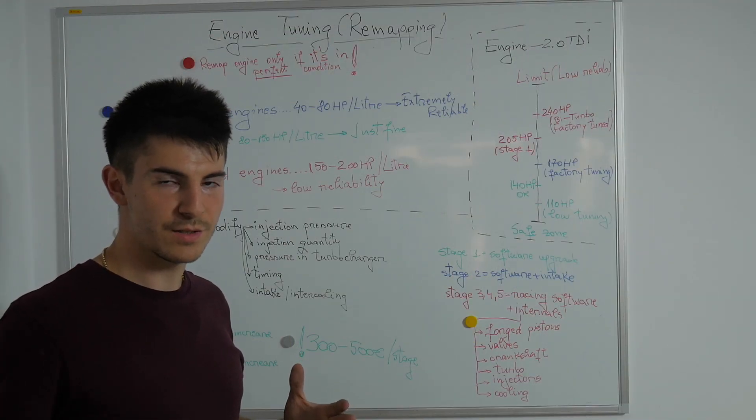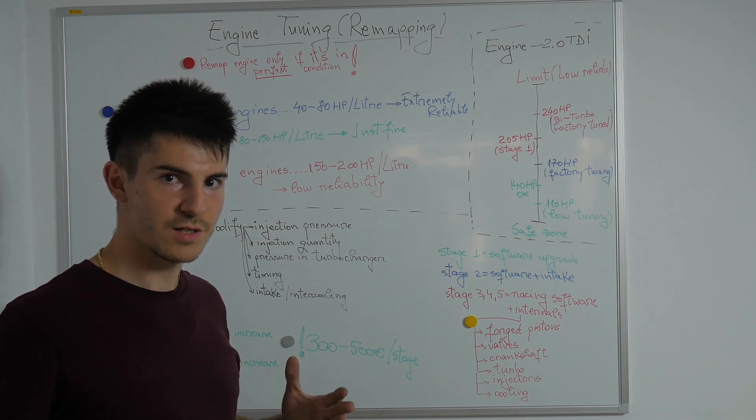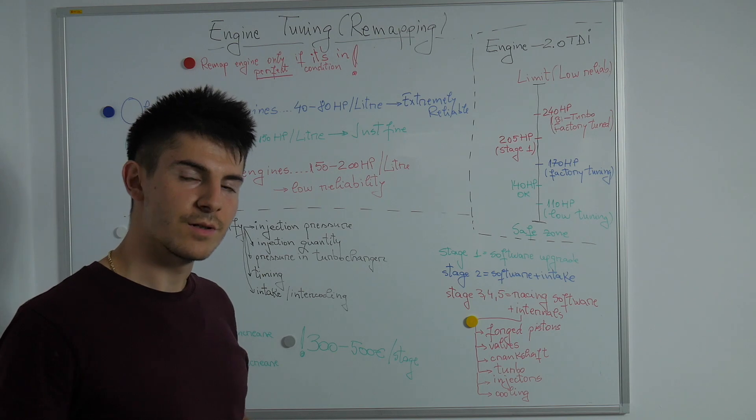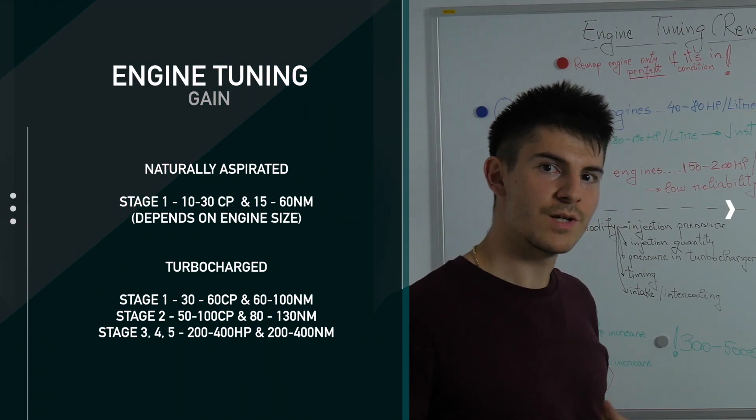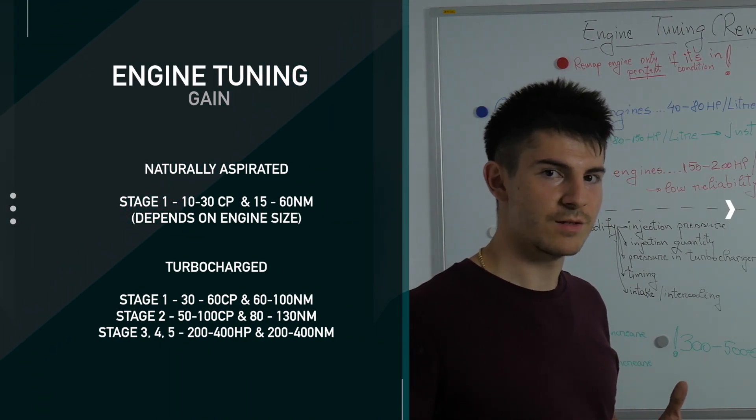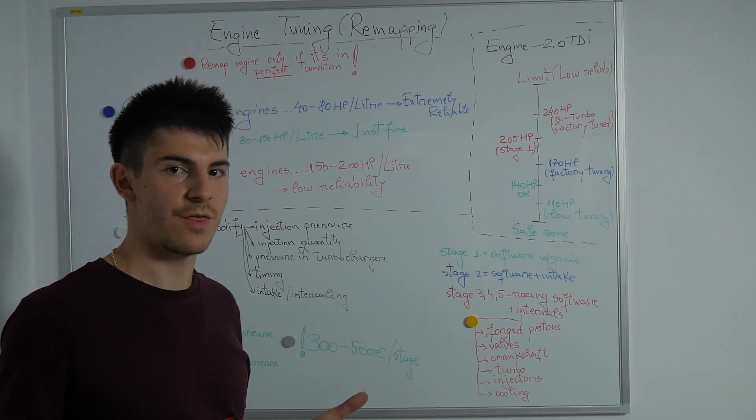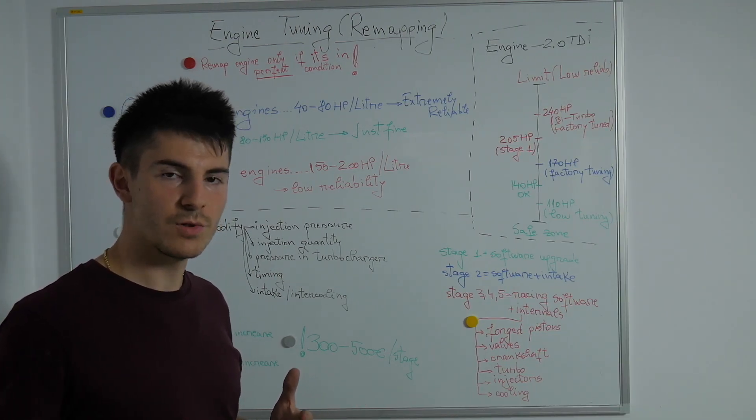By remapping or chiptuning the ECU from a car engine, it means that we are rewriting the software. If you chiptune a naturally aspirated engine you won't get too much out of it, you'll get around 5 to 20 horsepower and 10 to 30 Nm of torque.